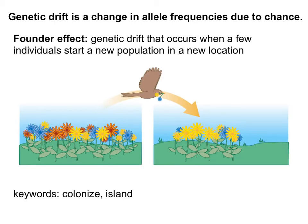The second type of genetic drift is the founder effect, which occurs when a few individuals start a new population in a new location. Keywords can be colonized or island. In this example, a bird took a couple flowers from one population, and now the seeds have started a new population elsewhere. With genetic drift, it's not survival of the fittest — it has nothing to do with the better ones surviving because it is random. The red ones might have had strengths, but randomly they just didn't make it into the new population.